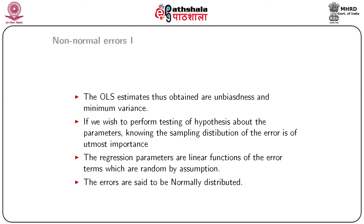If we wish to perform testing of hypotheses about the parameters, knowing the sampling distribution of the errors is of utmost importance. The sampling distribution of the error term is very useful when performing testing of hypotheses. The regression parameters are linear functions of the error terms — we have seen how beta 0, beta 1, and so on can be written as linear functions of the error terms.